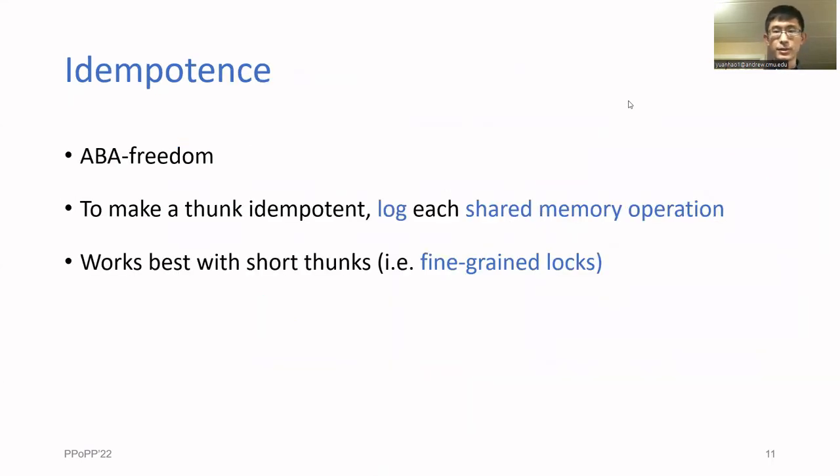Now we'll talk about the details of our algorithm, starting with how we ensure idempotence. We begin by making the code ABA-free, meaning that the same values should never be written to the same memory location twice. In general, this can be done by tagging each location with a counter. But our library uses a more optimized version that avoids double-wide compare and swap.